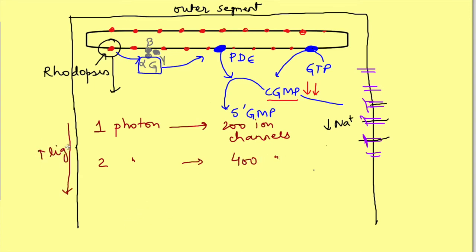Instead, as light intensity increases, this closure of sodium channels becomes less and less. So maybe like two photons will cause closure of 100 more channels and maybe one more photon if it comes, it will cause closure of additional 50 channels only. Point is that the relationship is not linear.